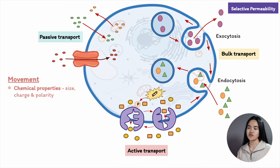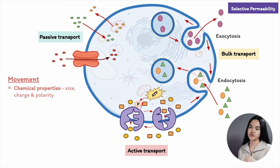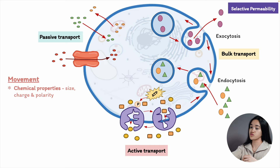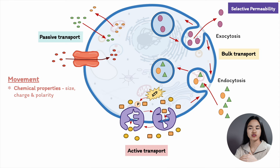Depending on the size and polarity of molecules, they either diffuse between the phospholipid molecules, or pass through channels and transporters created by the membrane proteins. For bigger molecules such as proteins and polysaccharides, bulk transport is used — endocytosis for transport into cells, or exocytosis if the molecules are to be transported out. The way in which molecules move across the membrane depends on their chemical properties such as size, charge, and polarity, and whether or not the bilayer is permeable to the substance.